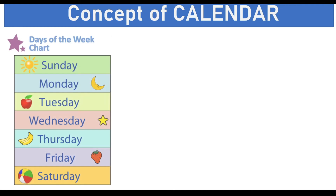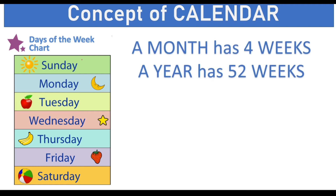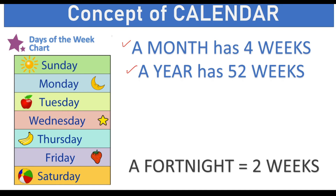The next concept in the calendar is the days of the week, which go from Sunday to Saturday. There are 7 days in a week, 1 month has 4 weeks, and 1 year has 52 weeks. These are some important conversions to keep in mind. Also, the word fortnight indicates 2 weeks. With this knowledge, we are ready to tackle the problems in this topic.